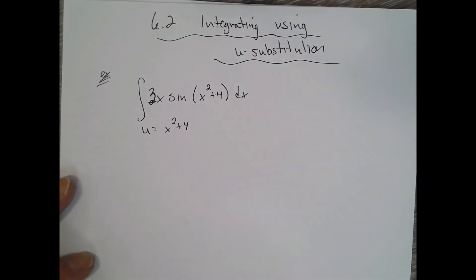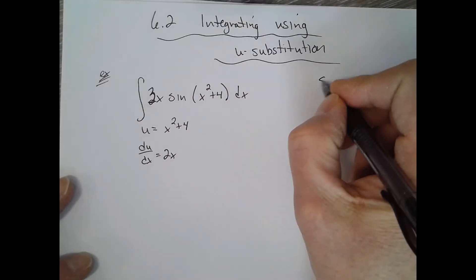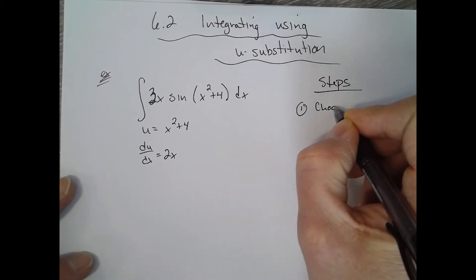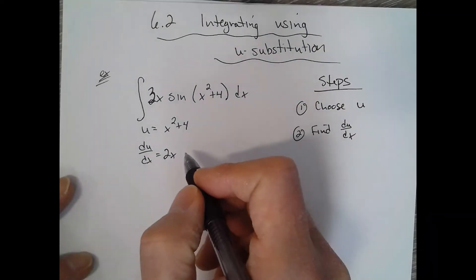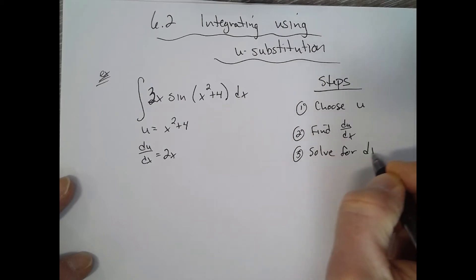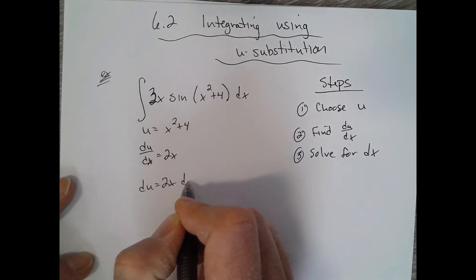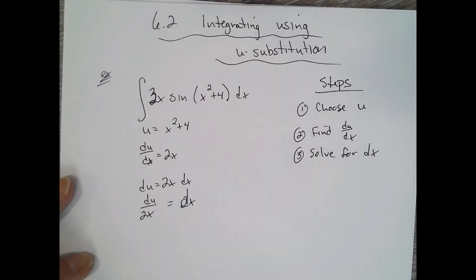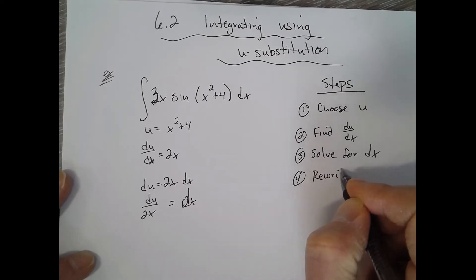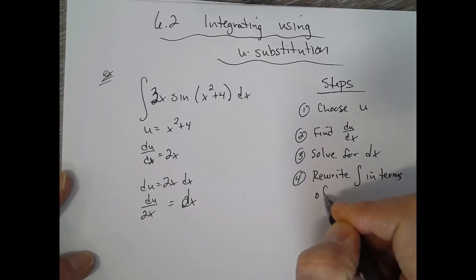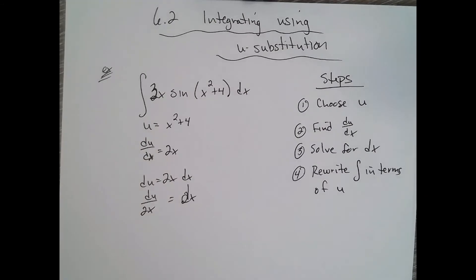The process is to choose what your u is, and then find the derivative. So steps: choose u, find du dx. Now we're going to solve for dx. So dx equals du over 2x. Step three would be to rewrite the integral in terms of u, so the purpose of u substitution is to create an integral in terms of u which will be more simply evaluated.